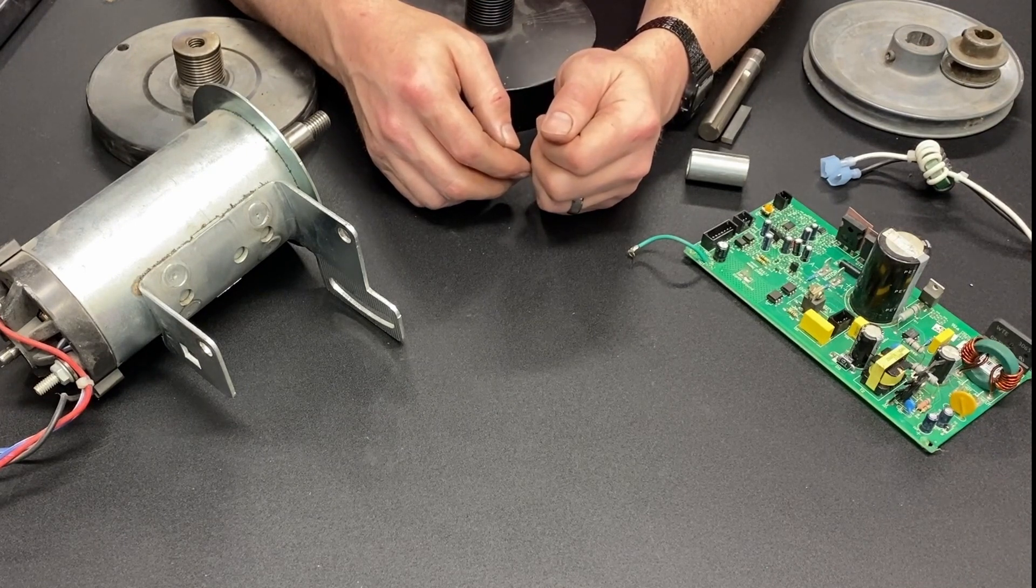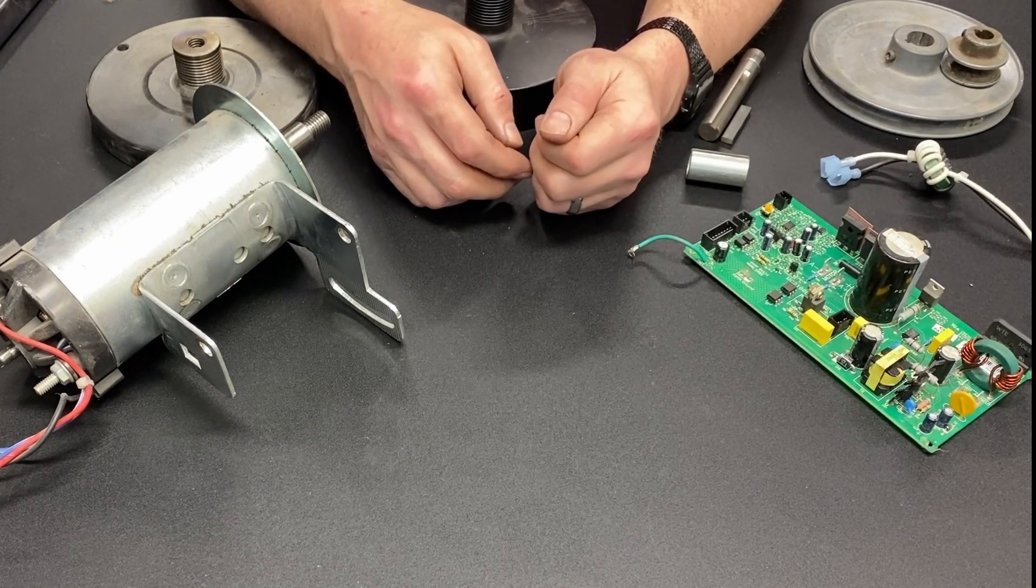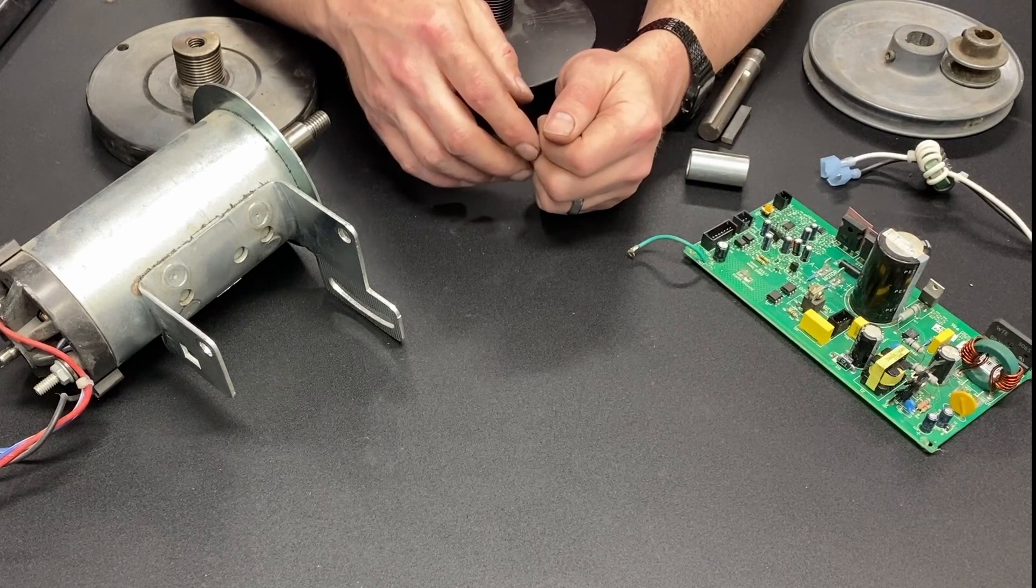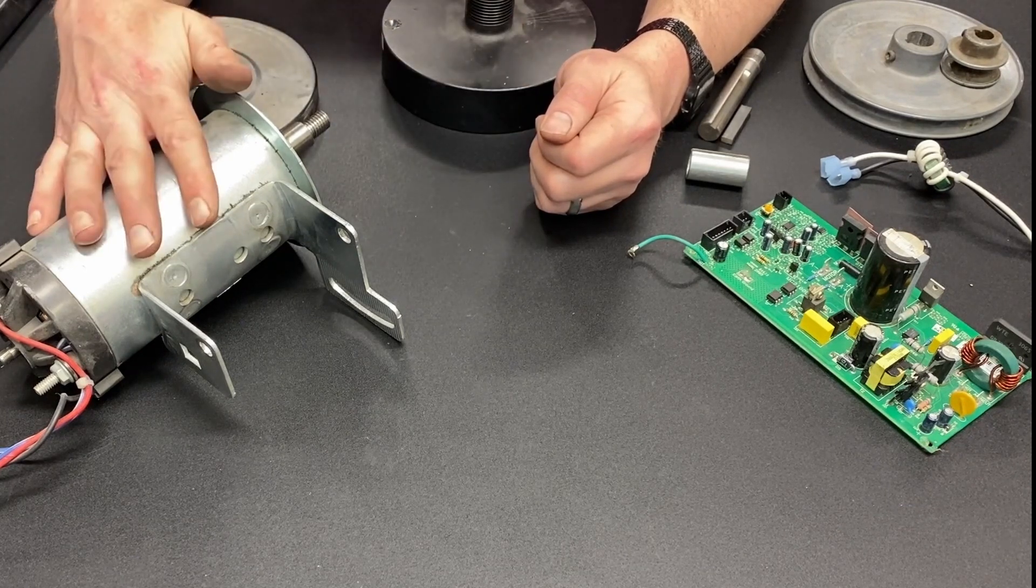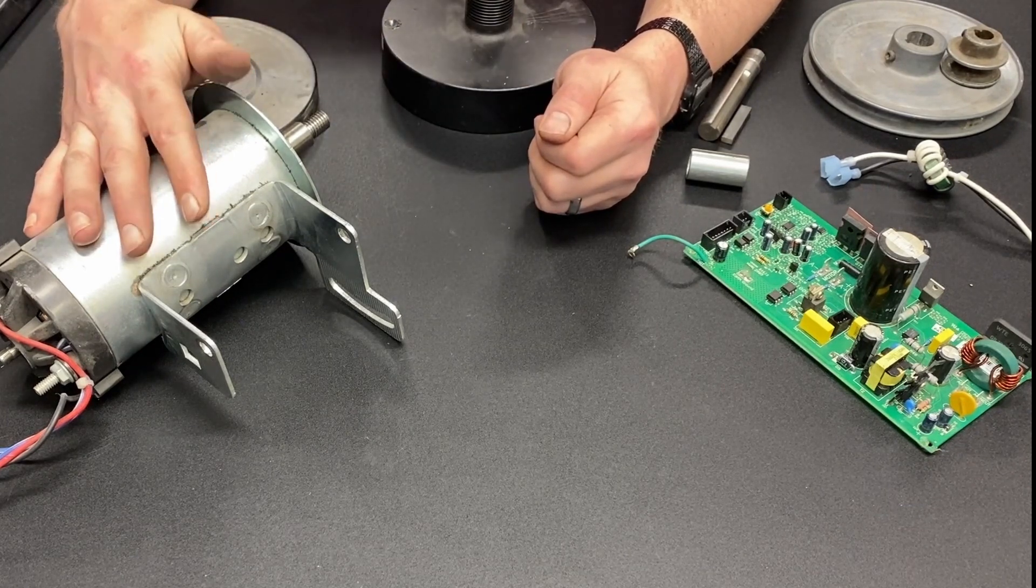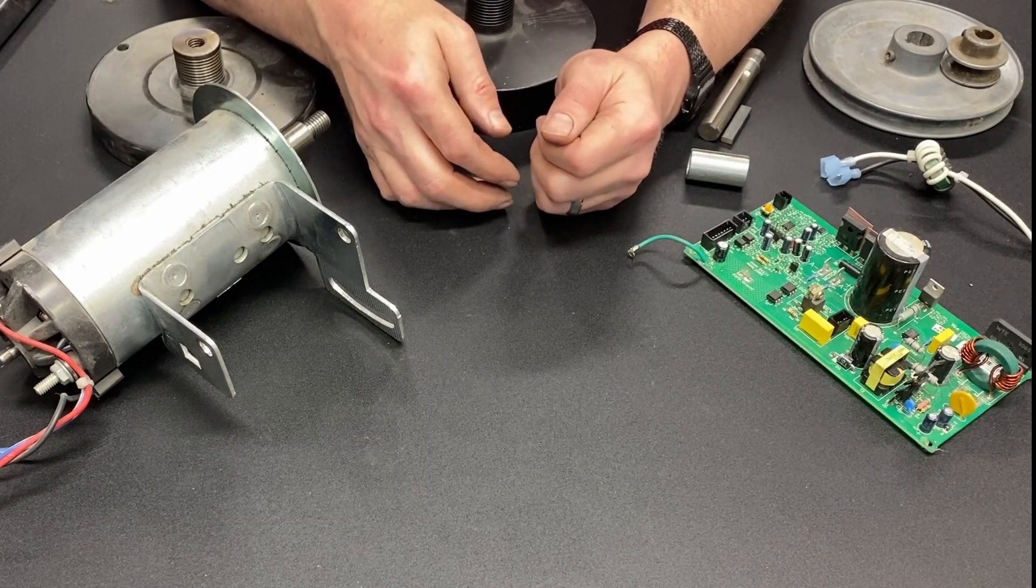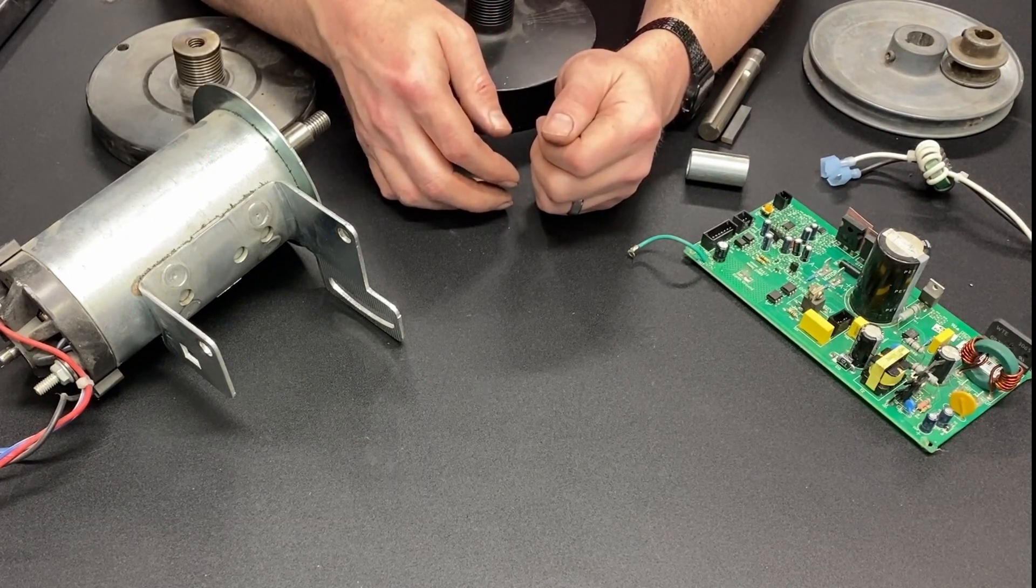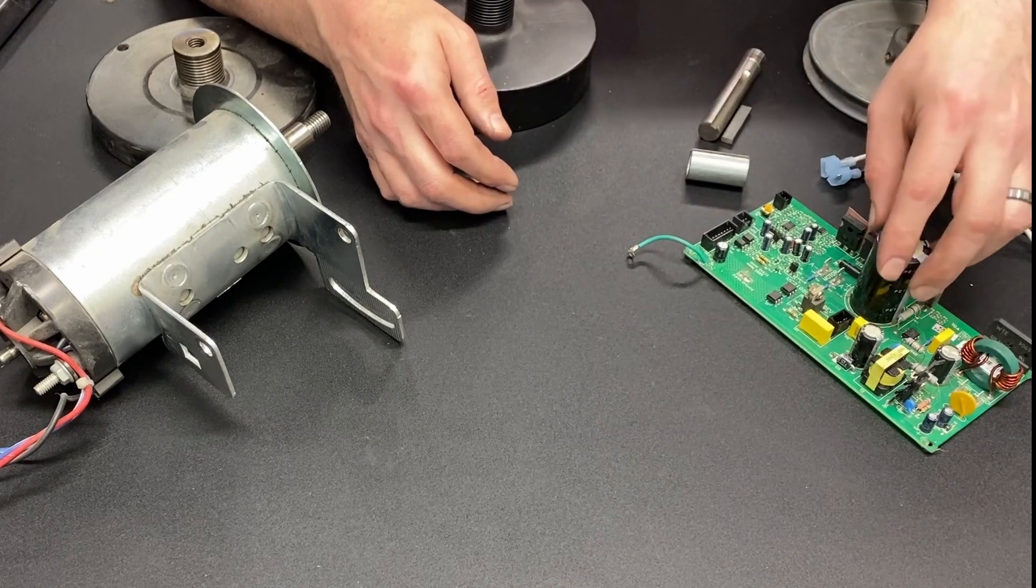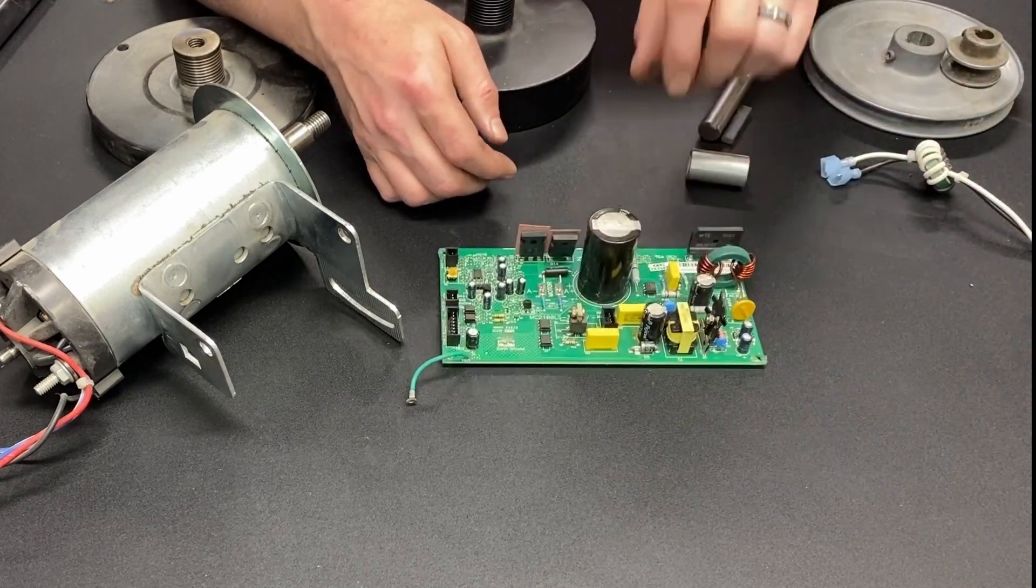Now when I was originally doing testing, using a circuit like that made a huge difference when used with the motor, but with nothing else. Once I added the choke into the mix, the RC circuit became a whole lot less important.